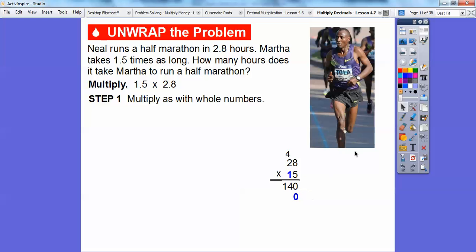1 times 8 is 8, so we'll put an 8 here. And then 1 times 2 is 2. So this is going to be 2, 8. So 28 with a 0 right there. Let's add those up. We get 420.